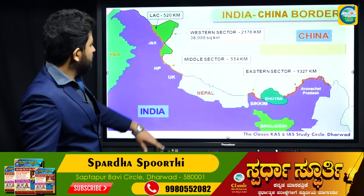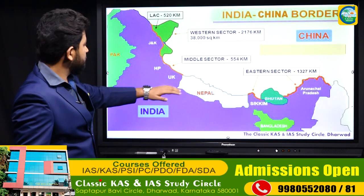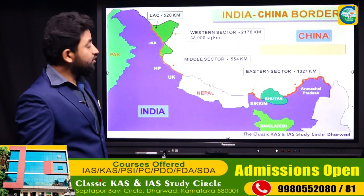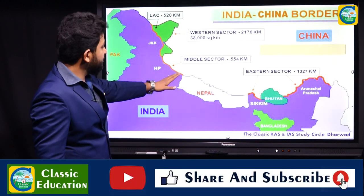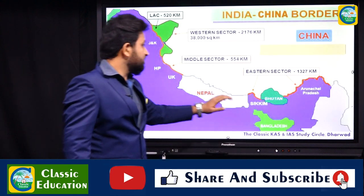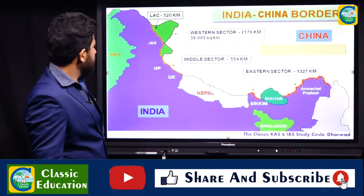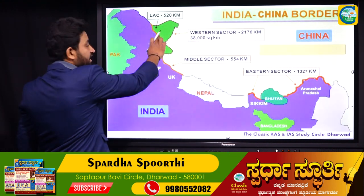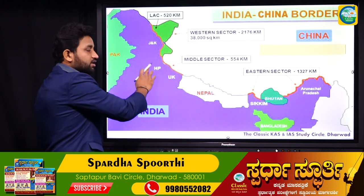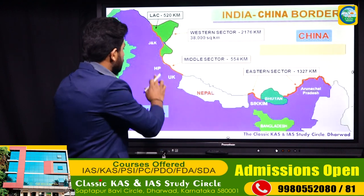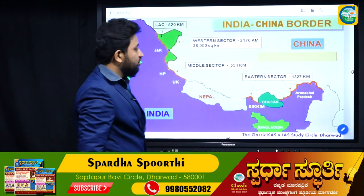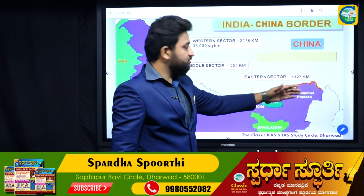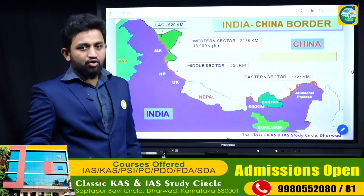Looking at the India-China map, the approximately 3,400-kilometer border can be divided into three sectors: the western sector, the mid sector, and the eastern sector. In the western sector comes the Ladakh region. In the middle section are Himachal Pradesh and Uttarakhand. In the eastern sector come Arunachal Pradesh and Sikkim.